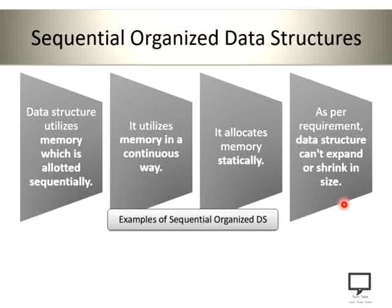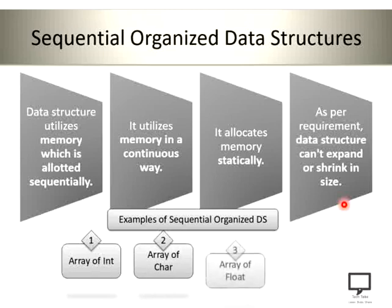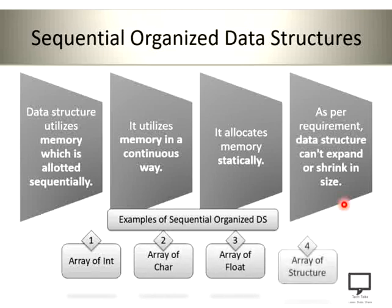Now let's see the examples of sequential organized data structures. They are arrays — basically arrays of type integer, of type character, of type float, or array of structure. So any type of array will be an example of sequential organized data structure.